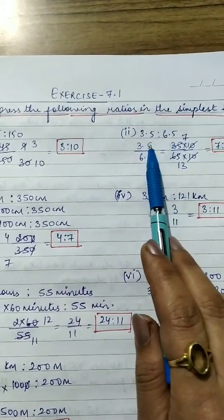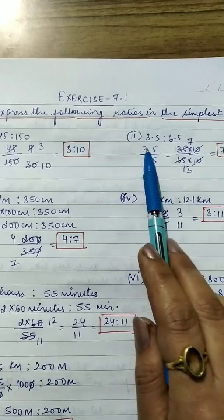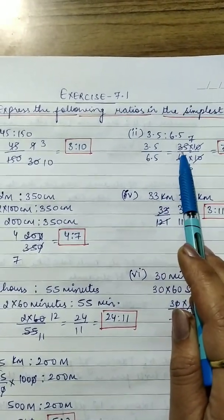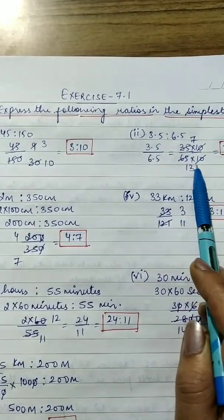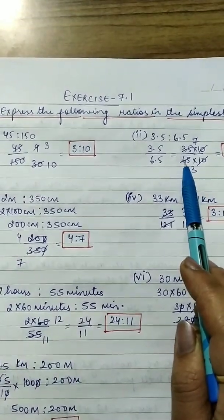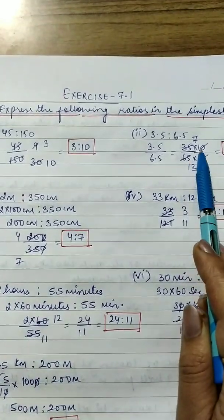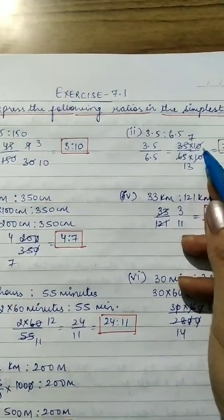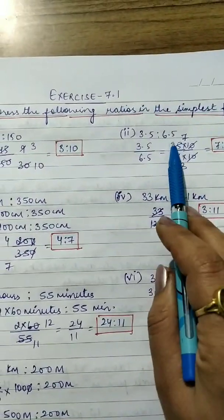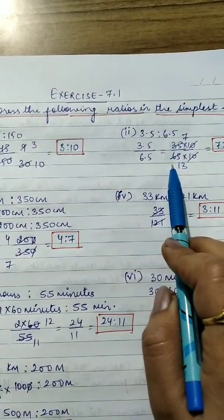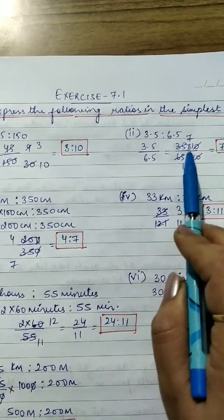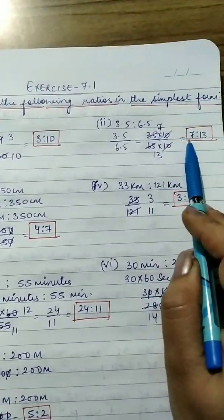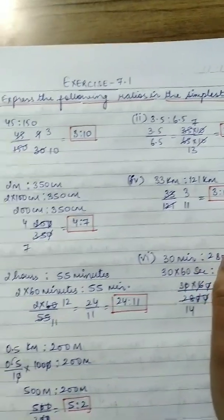For 3.5:6.5, first remove the decimals by multiplying numerator and denominator by 10. The 10s cancel, leaving 35/65. Both are in the table of 5, giving 7/13. So the answer is 7:13.